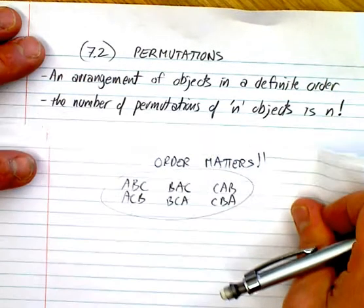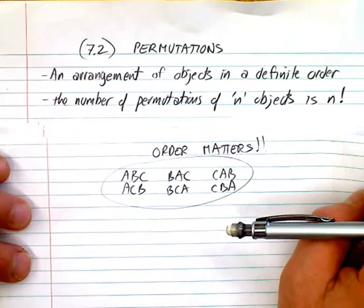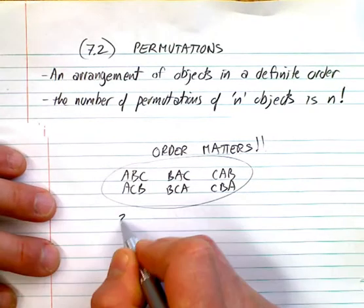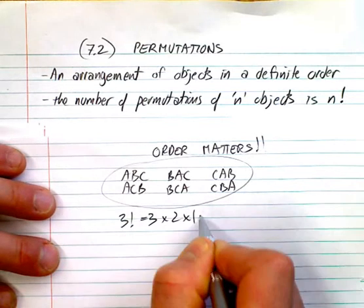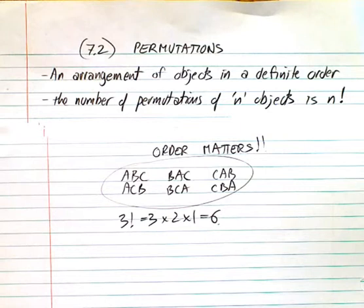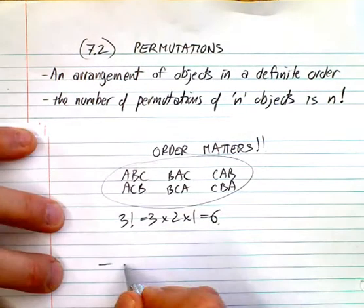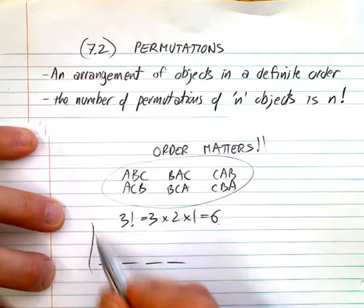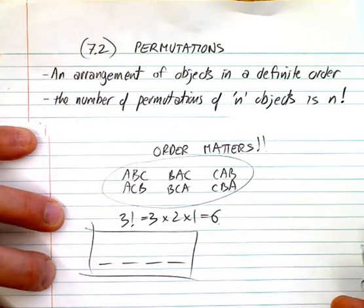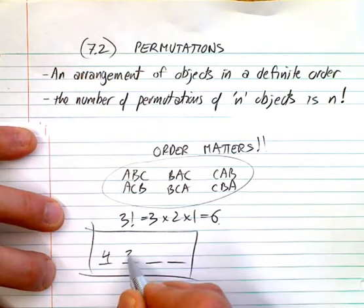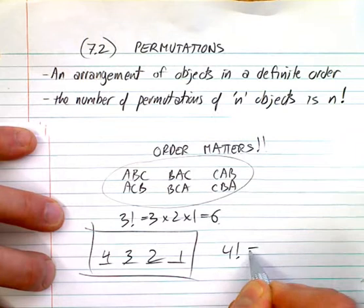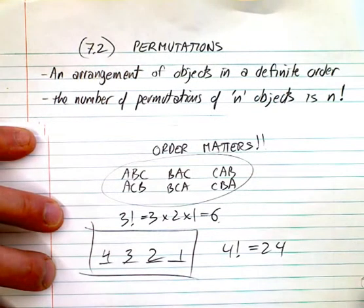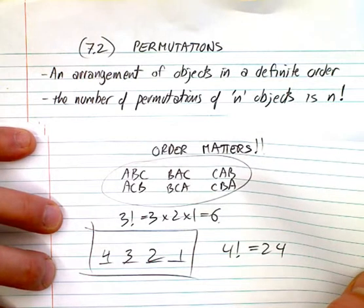The number of permutations of n objects is n factorial. So if you want three letters, that means three factorial — which is 3 × 2 × 1 = 6 — means you have six permutations. For example, you have a family of four lining up for a picture. You've got four choices for the first spot, then three, then two, then one, which is 4 factorial. That gives you 24 different arrangements, or 24 different permutations.